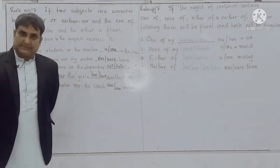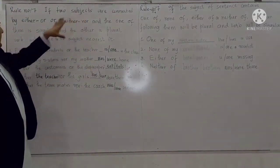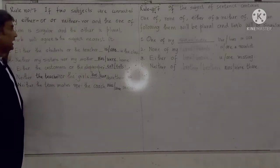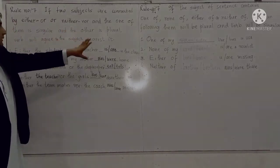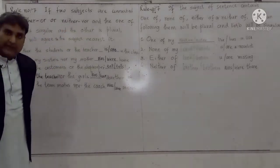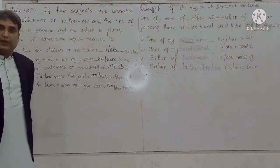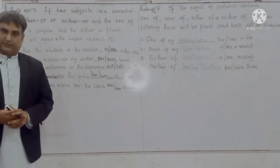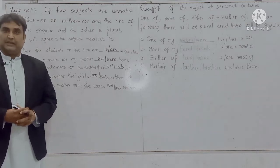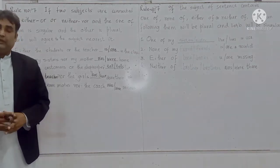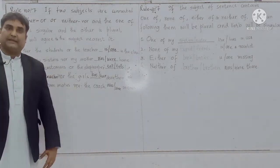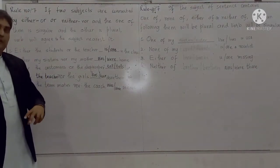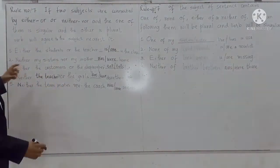If two subjects are connected by either/or or neither/nor, and one of them is singular and the other is plural, in such a case the verb agrees with the subject nearest to it. If the subject nearest to the verb is singular, a singular verb will be used, and if the subject nearest to the verb is plural, a plural verb will be used.